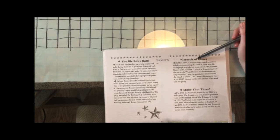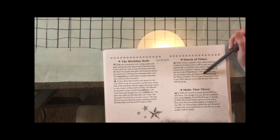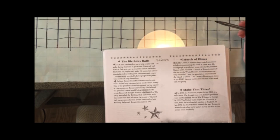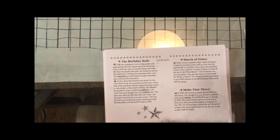March of Dimes. Eddie Cantor, a popular singer, asked Americans to help the president's polio work in a new way. He asked people to send their extra coins to the president. Cantor said it would be a March of Dimes to reach all the way to the White House. This fundraiser was very successful. Later the association renamed itself the March of Dimes. The Treasury Department chose to put FDR's likeness on the dime because of his work with the association. So there's something else in that section that we could add to our solutions list.